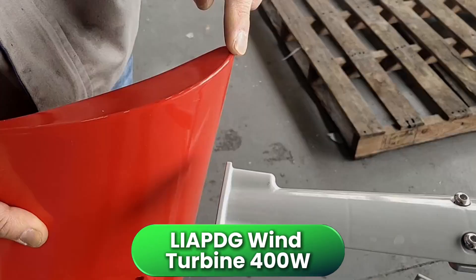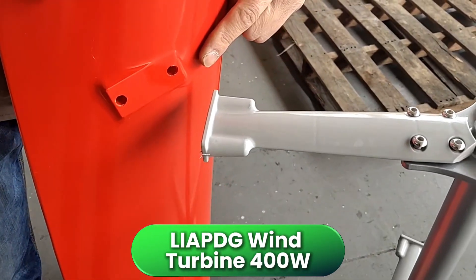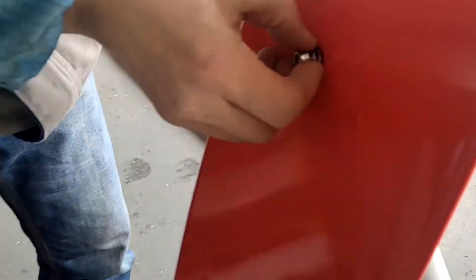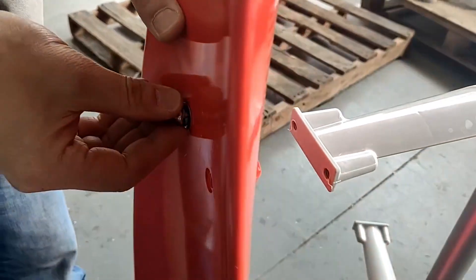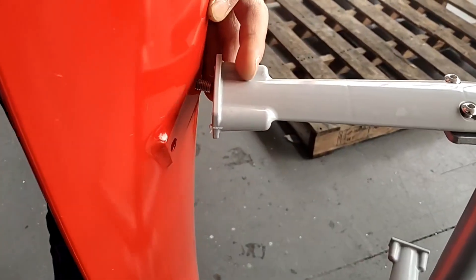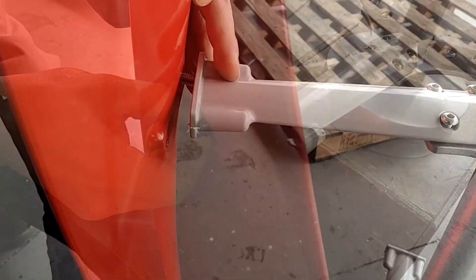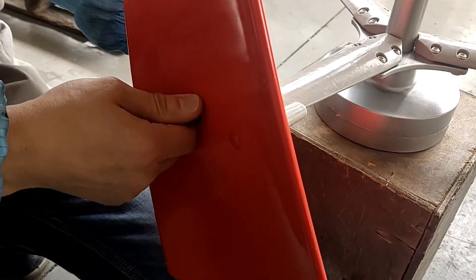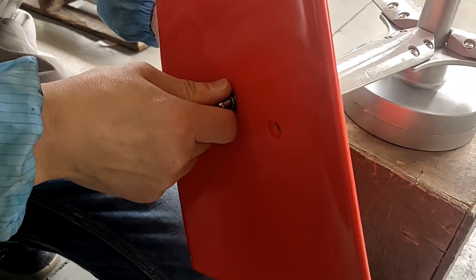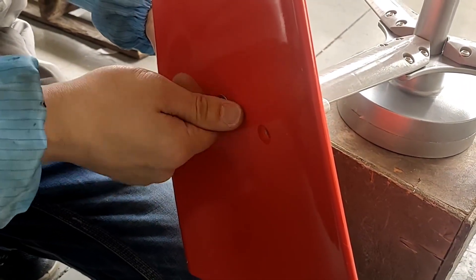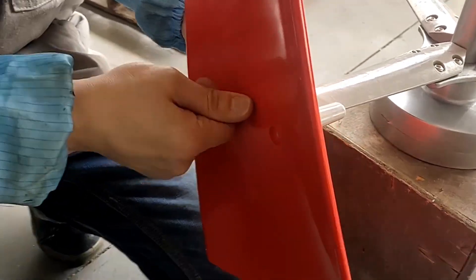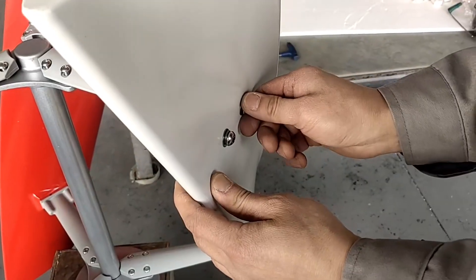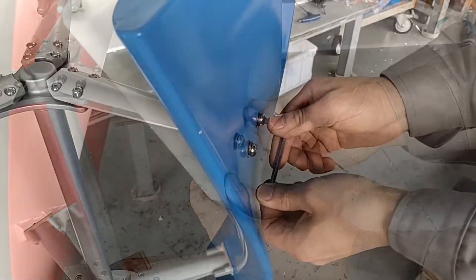Switching things up, the LIAPDG 400-watt wind turbine brings something different to the table: a vertical axis design with a three-blade helical rotor. This configuration is less common in residential setups, but it offers a few unique advantages. For starters, it's more tolerant of turbulent wind, which makes it better suited to rooftops or urban environments where airflow isn't smooth. It also has a lower startup torque thanks to its permanent magnet generator and spiral blade design, so it'll begin spinning in gentle winds.